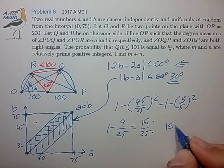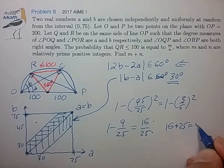That's a reduced fraction. 16 plus 25 is equal to 41, and that's our final answer.